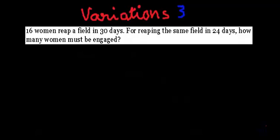Today in this class on variations we are going to solve one more problem. The problem is: if 16 women reap a field in 30 days, for reaping the same field in 24 days, how many women must be engaged?